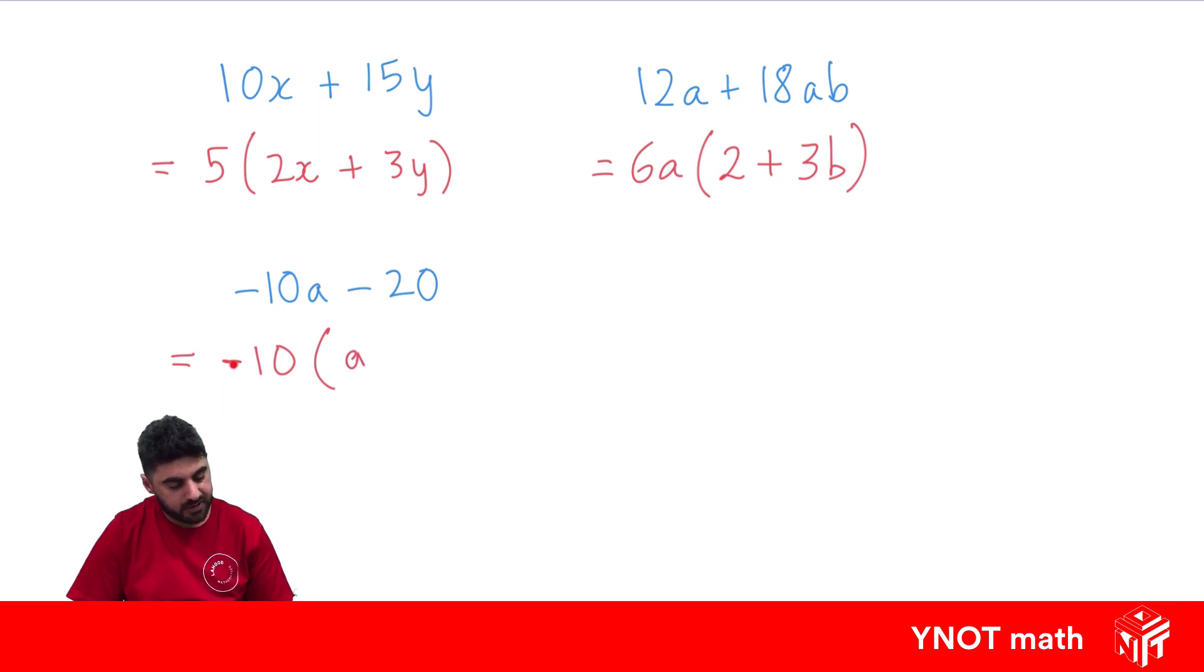And if we've taken out a minus here, this minus is going to change to a plus, because when we times the negative by the positive, we'll get back to a negative. And what do we need to times 10 by to get us back to 20? Well, we need to multiply by 2.